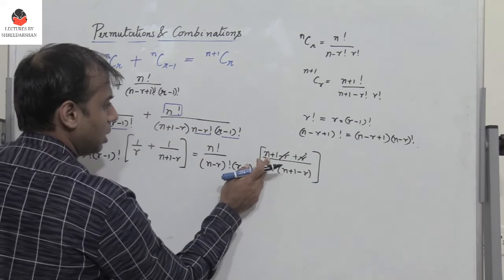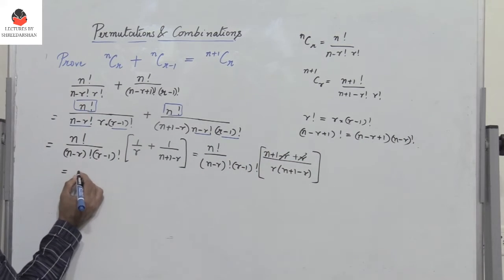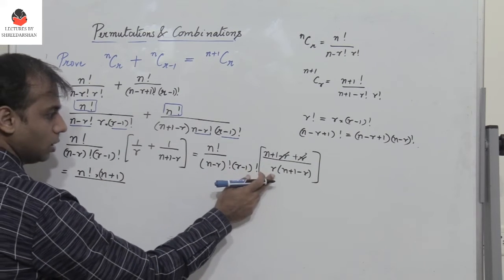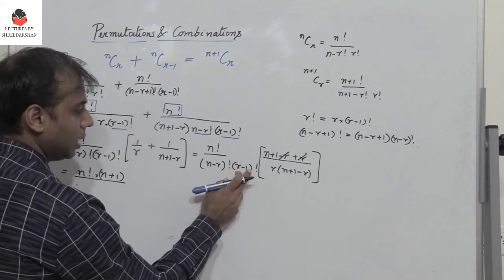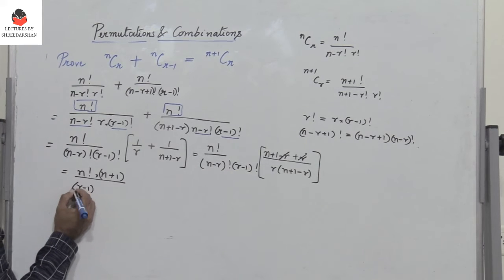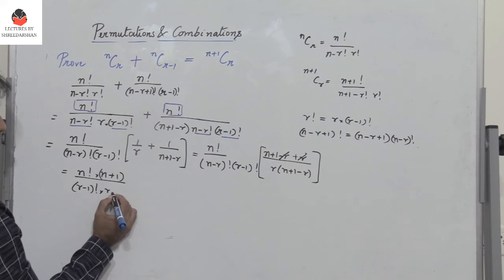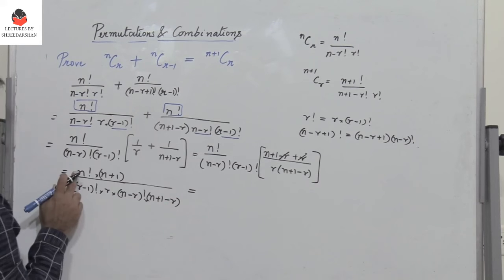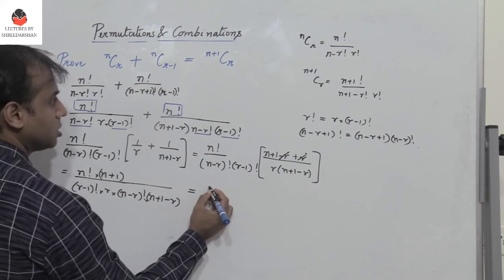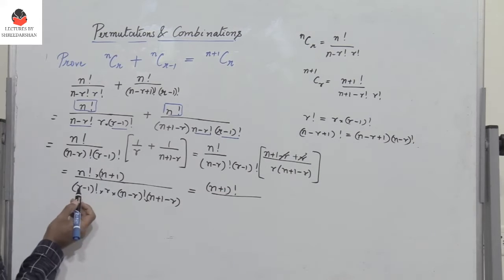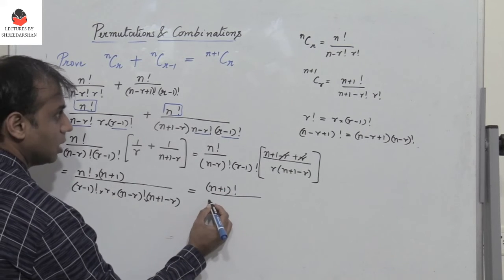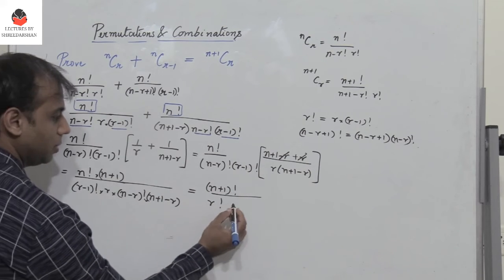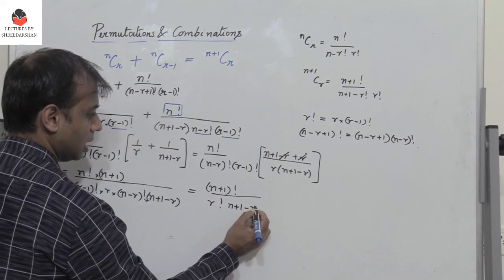So now we are multiplying N plus 1 with N factorial in the numerator, giving N plus 1 factorial. The denominator has (R minus 1) factorial into R, which is R factorial, and (N minus R) factorial into (N plus 1 minus R), which is (N plus 1 minus R) factorial.